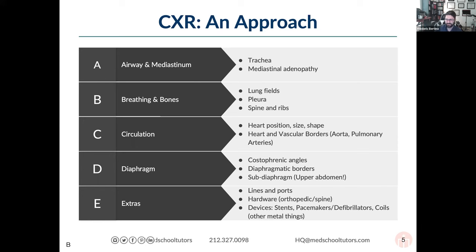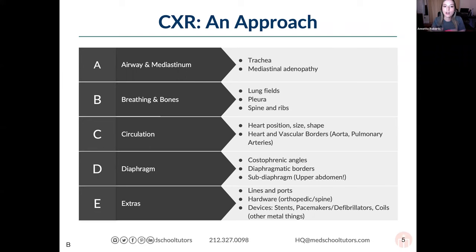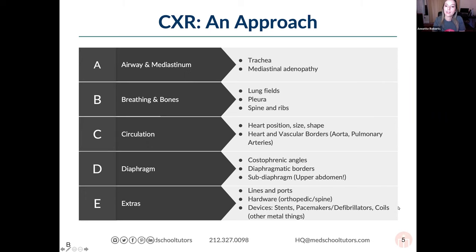A is for airway and mediastinum. In pediatrics, residents are expected to know the basics of an image. The first thing you want to do is look at what's biggest in the picture — that's usually the lungs. You want to see how inflated they are, whether they're symmetrical, and look at the mediastinum: is it centered or is there some deviation?